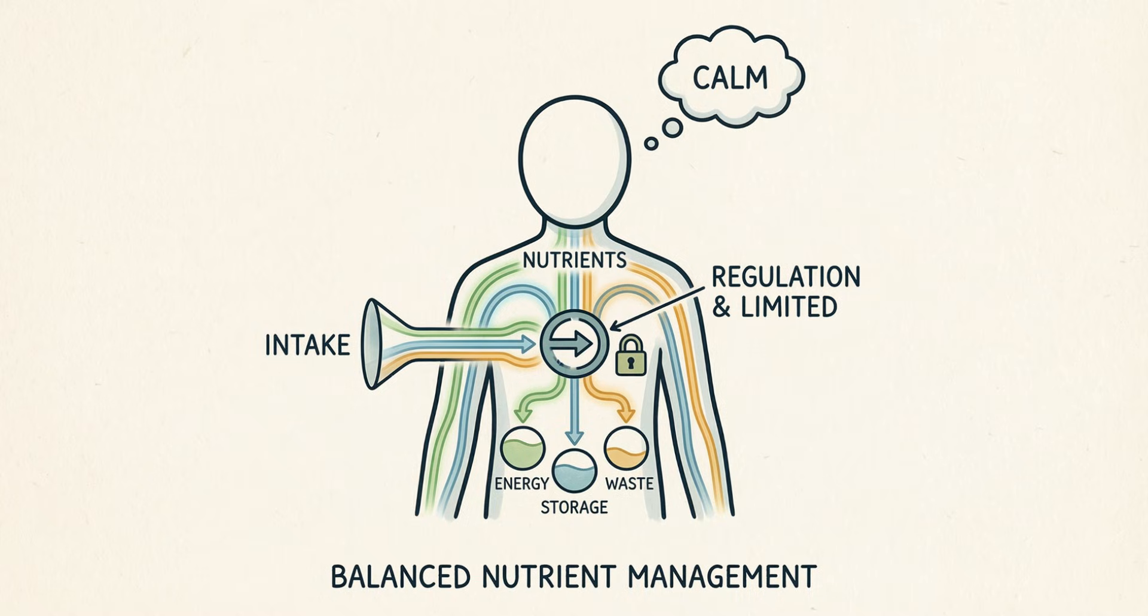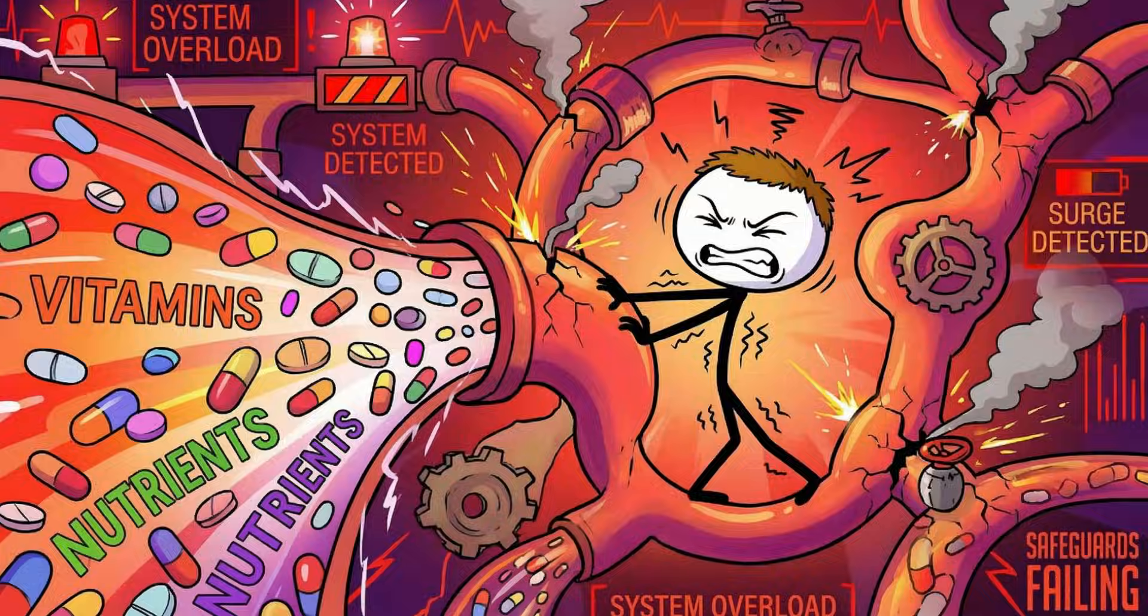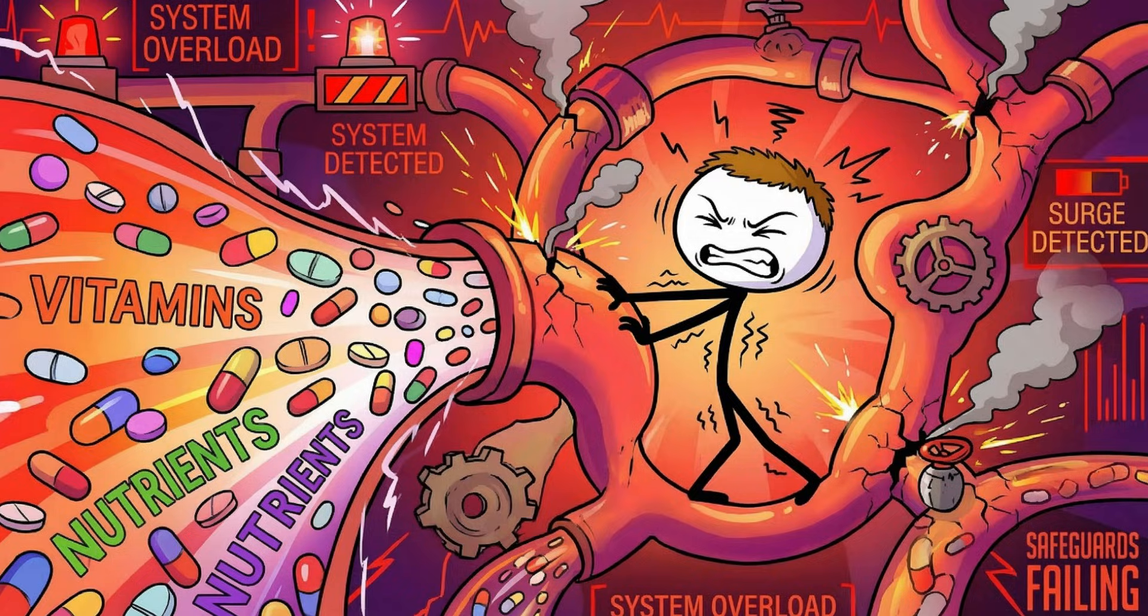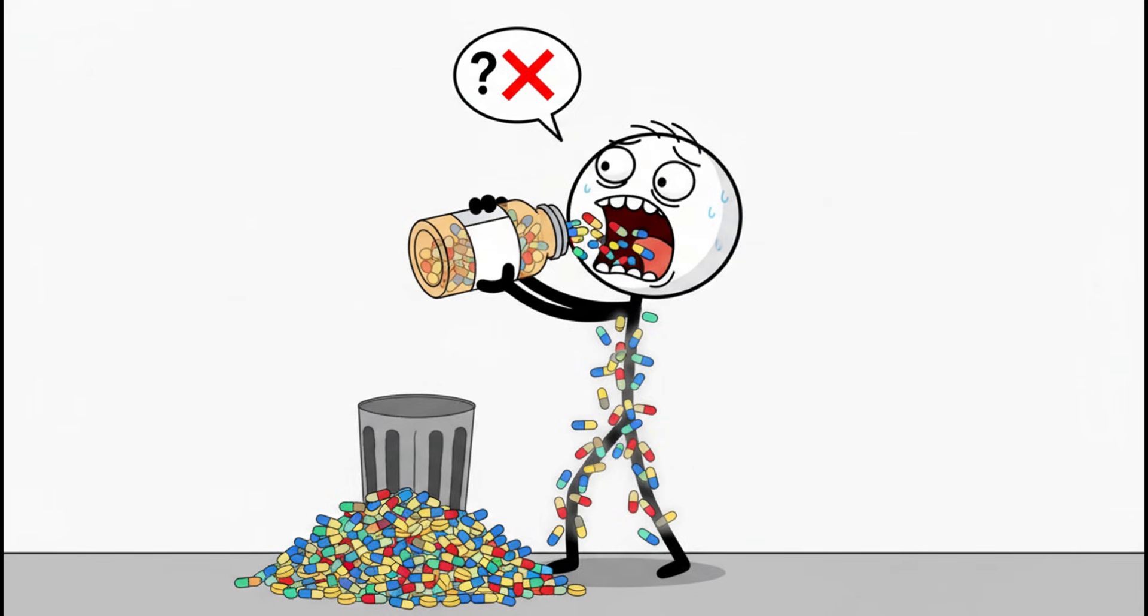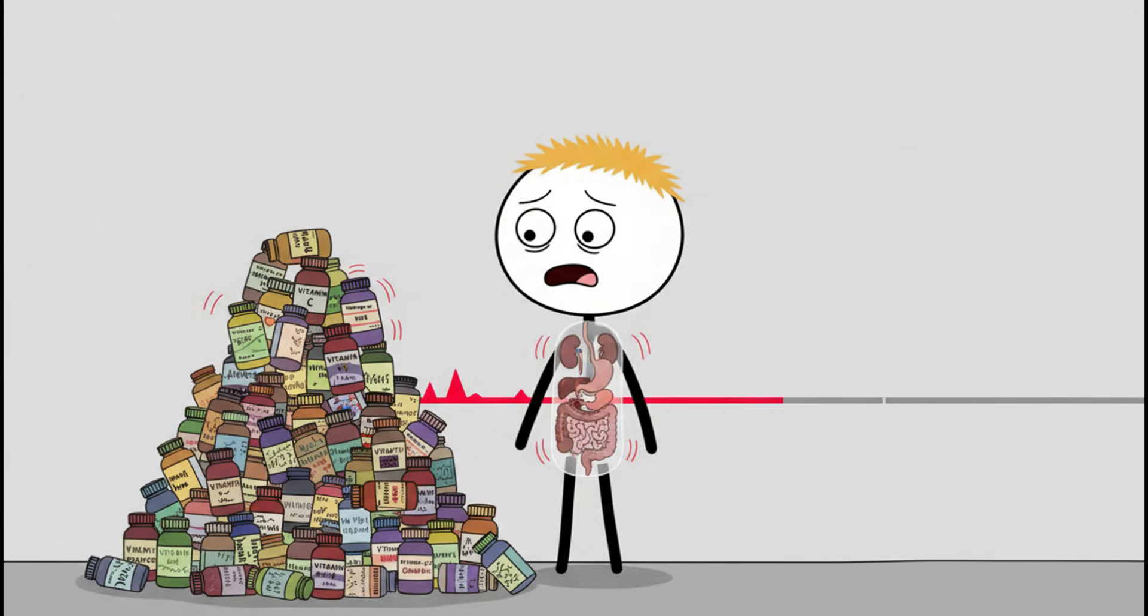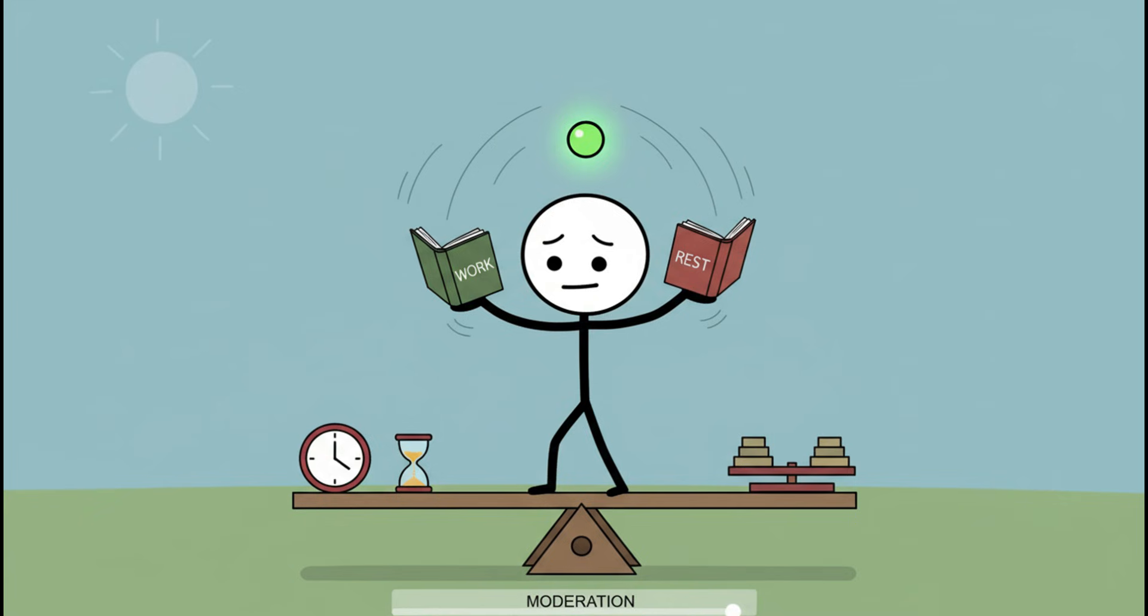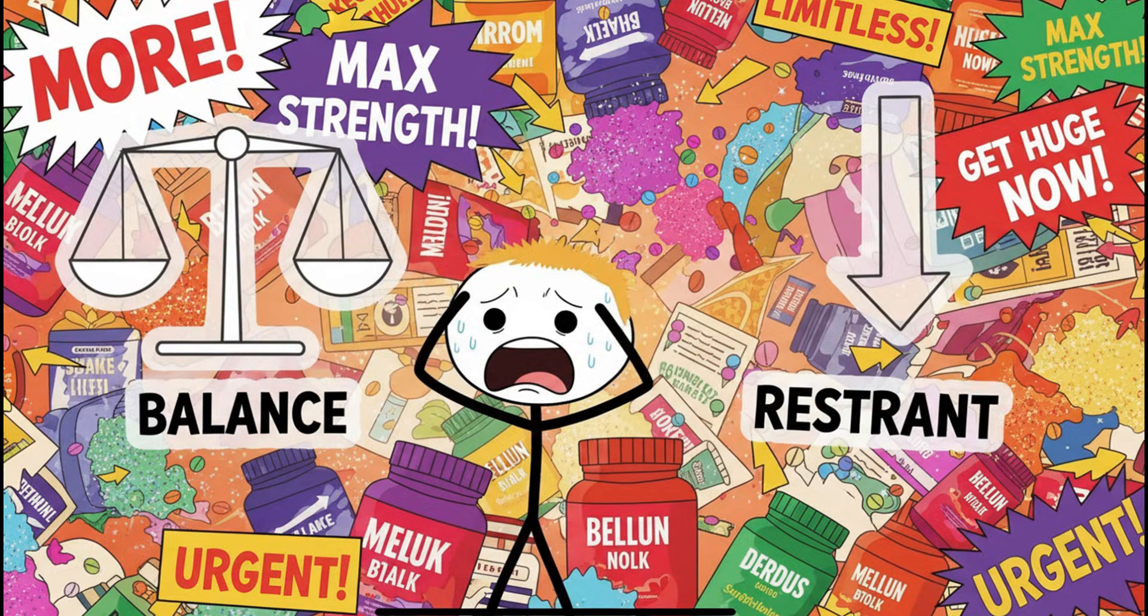The irony? Your body has safety mechanisms: absorption limits, transport proteins, feedback loops. Mega-dosing is basically yelling at those systems until they give up and let chaos in. More vitamins don't make you healthier. They make your urine more expensive and your organs more stressed. Health isn't built by flooding the system. It's built by balance, timing, and restraint. Three things supplement marketing avoids mentioning.